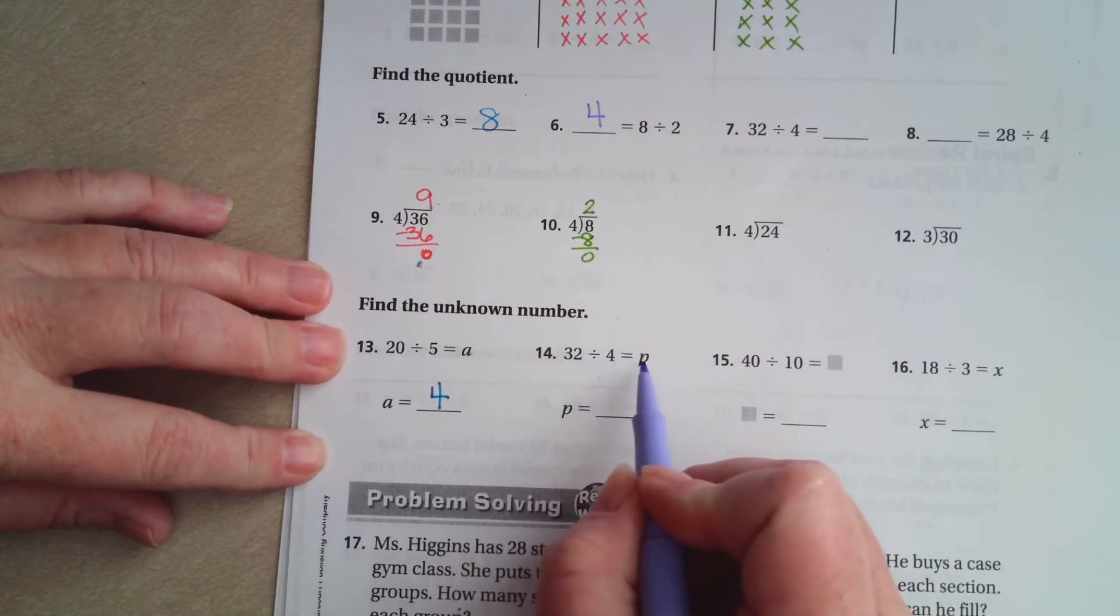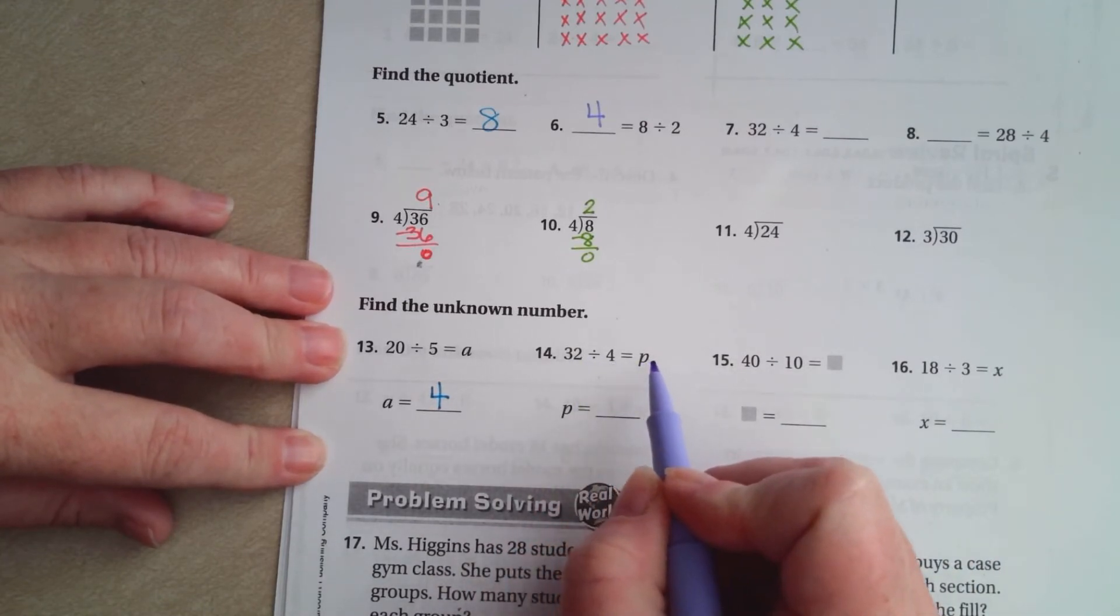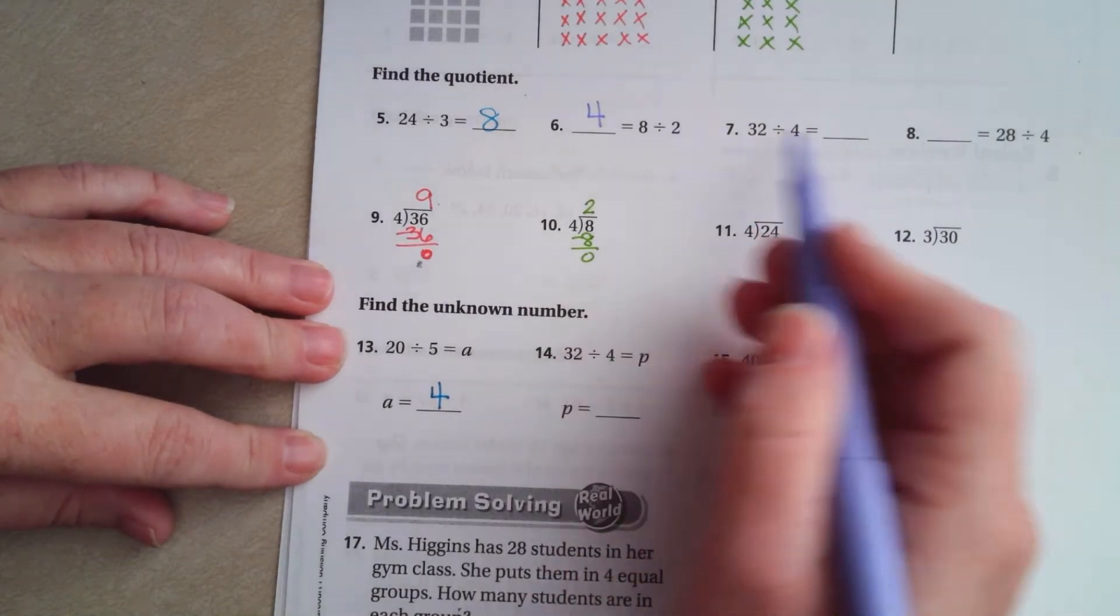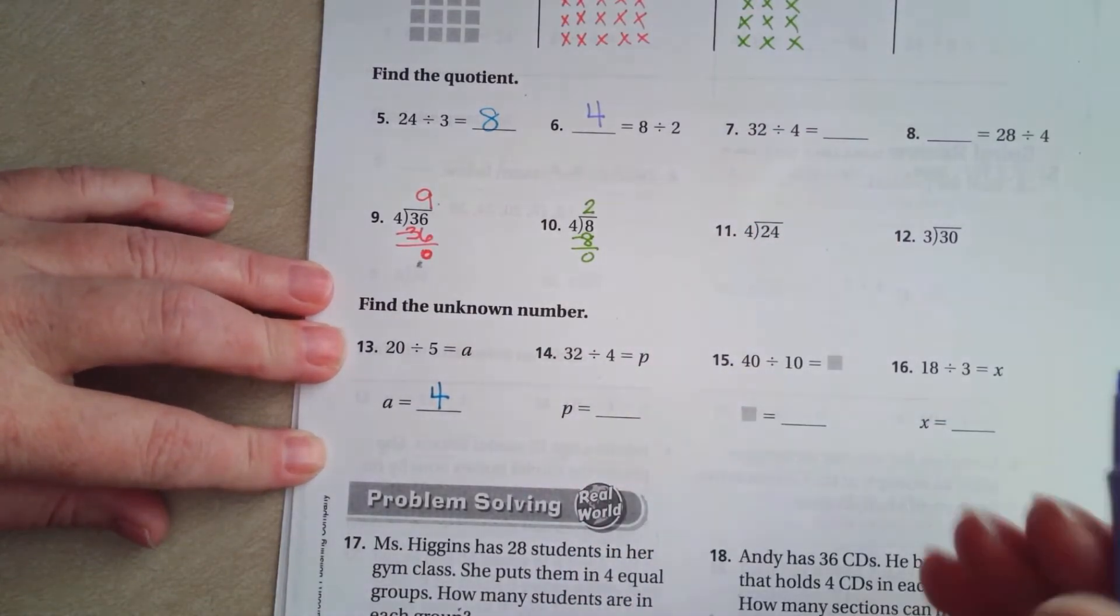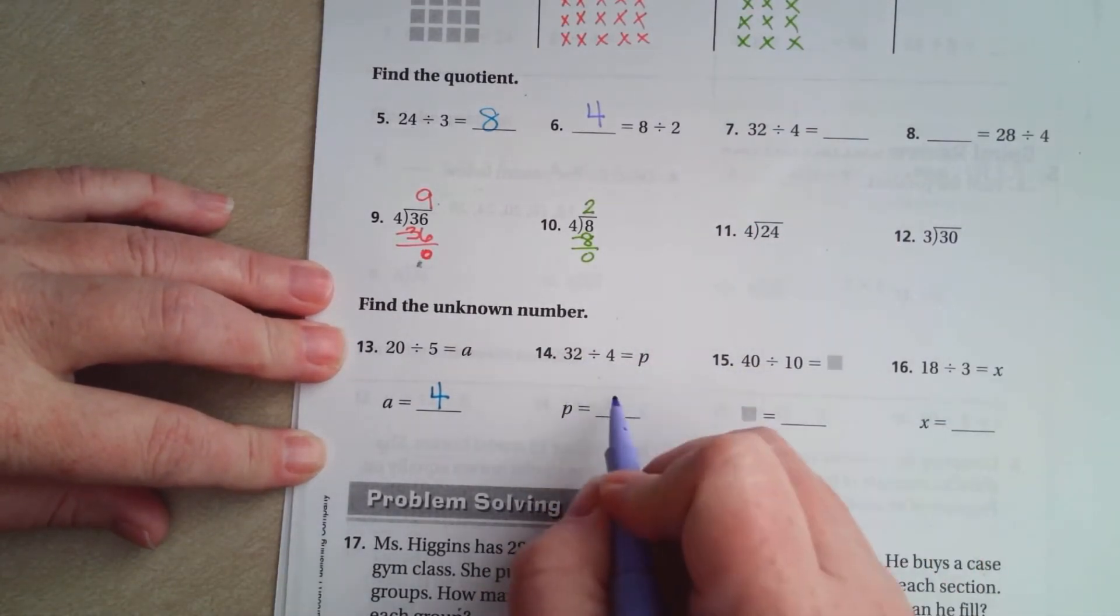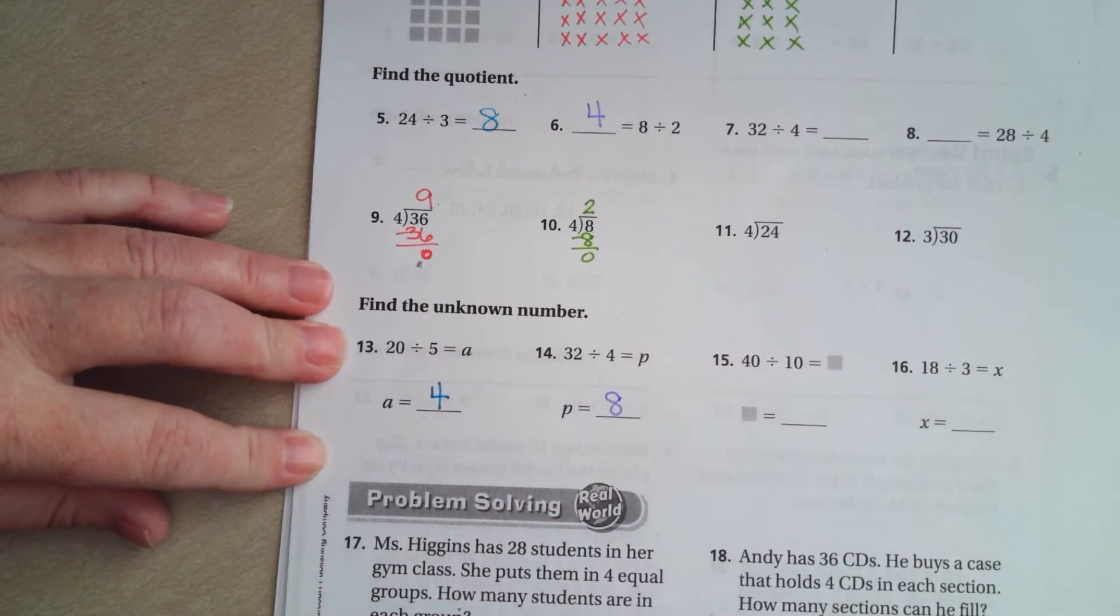32 divided by 4 equals P. It's the same as leaving it blank just like up here, guys. So 4 times what is 32? 4 times 8 is 32.